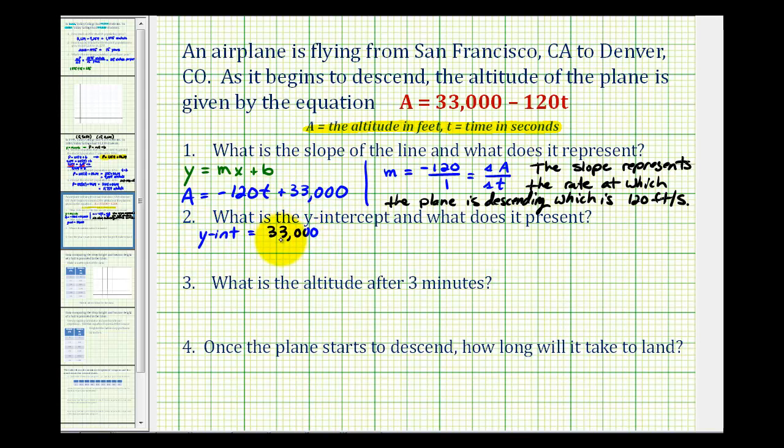Remember, the Y-intercept occurs when X is equal to zero, or in this case, when T is equal to zero. Well, at T equals zero, that's at the instant the plane starts to descend. So T equals zero represents the height of the plane right before it begins to descend. So the Y-intercept is 33,000, and this should be in feet, which represents the altitude of the plane right before it descends.